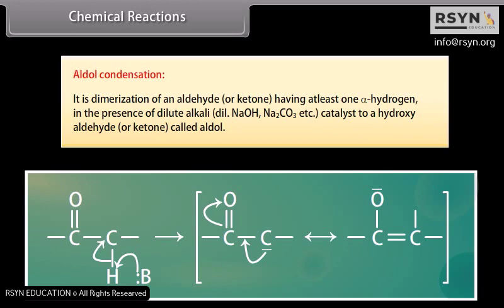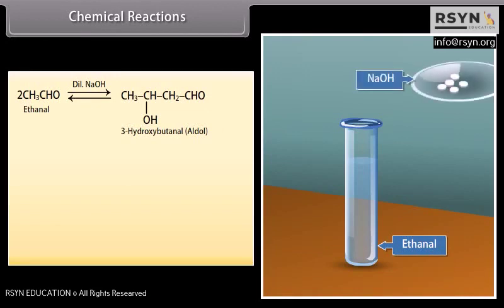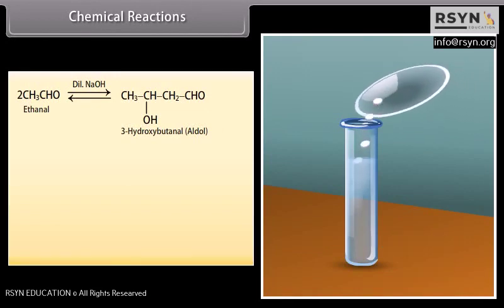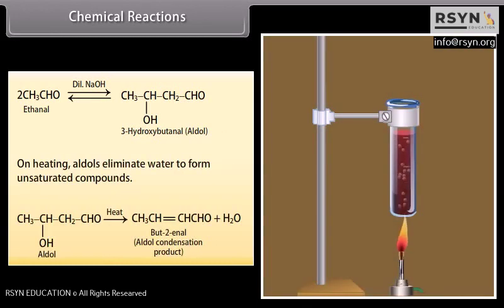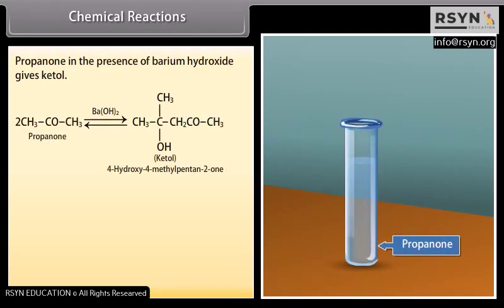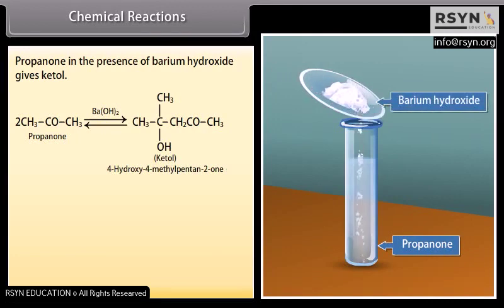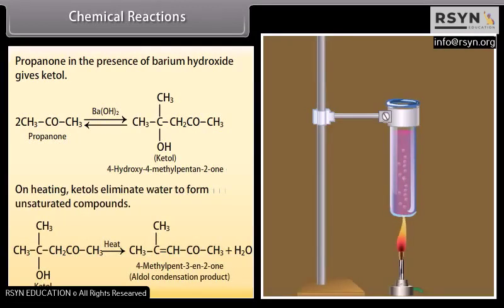The catalyst converts it to a hydroxy aldehyde or ketone called aldol. Ethanal in the presence of dilute sodium hydroxide undergoes condensation to form a syrupy liquid known as aldol. On heating, aldols eliminate water to form unsaturated compounds. Propanone in the presence of barium hydroxide gives ketol, which also eliminates water on heating to form unsaturated compounds.